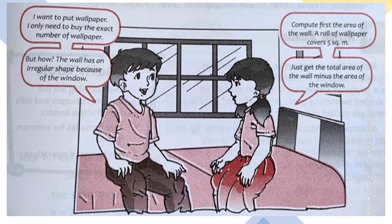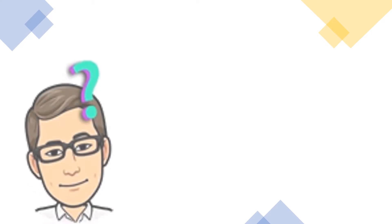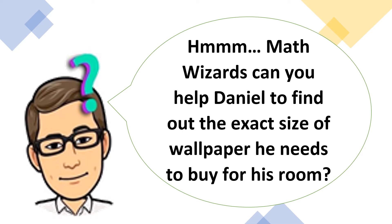Now, let's see the conversation of the siblings. One sibling says: 'I want to put wallpaper. I only need to buy the exact number of wallpaper. But how? The wall has an irregular shape because of the window.' The other replies: 'Compute first the area of the wall. A roll of wallpaper covers 5 square meters. Just get the total area of the wall minus the area of the window.' Math wizards, can you help Daniel find out the exact size of wallpaper he needs to buy for his room?